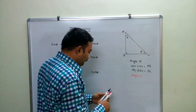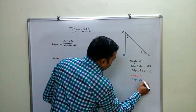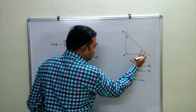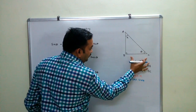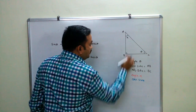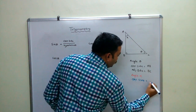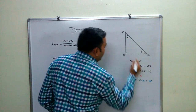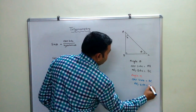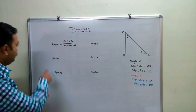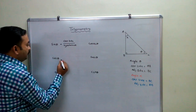For angle alpha, the opposite side is BC. Let us revisit: what is the value of sin theta? Sin theta is opposite side upon hypotenuse.